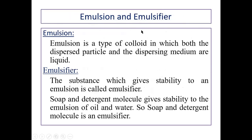What is emulsion and emulsifier? Emulsion is a type of colloid in which both the dispersed particle and the dispersing medium are liquid. The substance which gives stability to an emulsion is called an emulsifier.